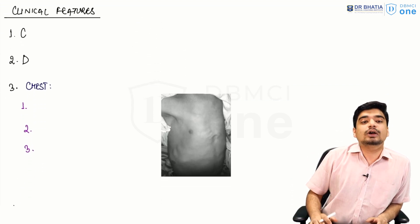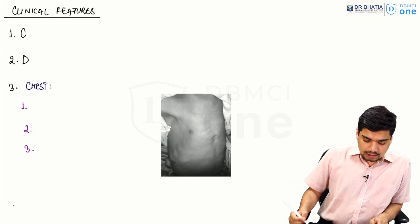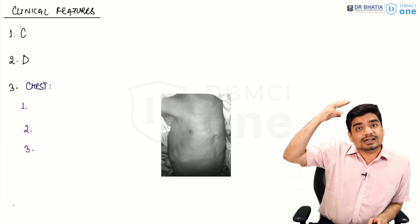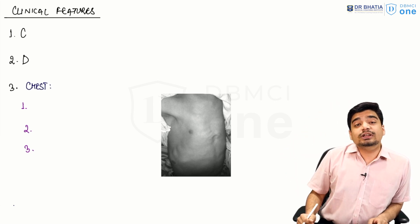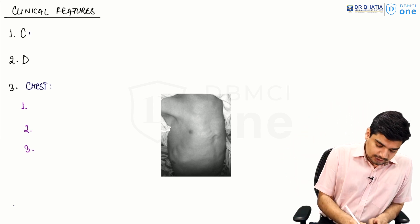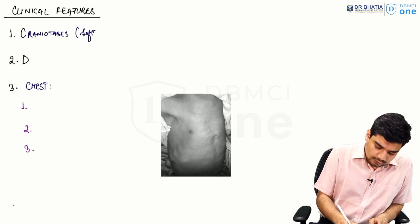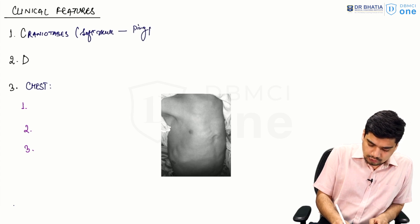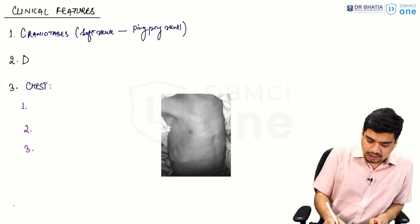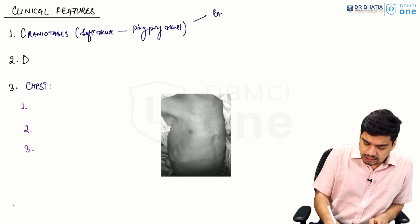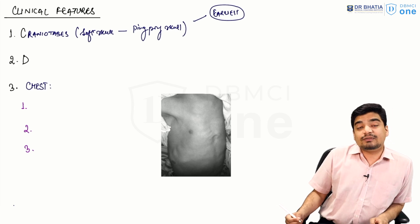The first clinical feature is defective mineralization of the cranial bones, resulting in what is called craniotabes — a soft skull, also called ping pong skull. Craniotabes is the earliest sign of rickets and vitamin D deficiency.